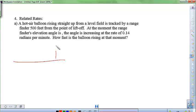The first one takes a look at a hot air balloon rising straight up from a level field and tracked by a range finder 500 feet away. So this is your balloon that's going up, and this is your range finder that's looking at it, 500 feet from the spot of liftoff. We don't have an angle of elevation here, so let's put 45 degrees.